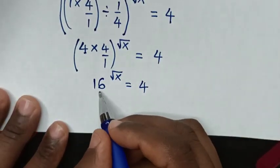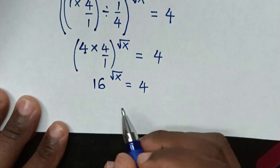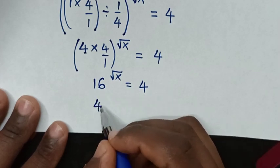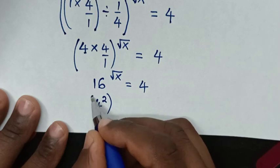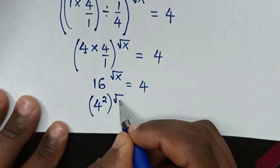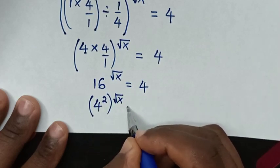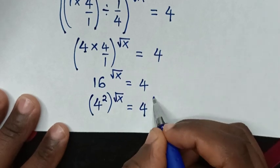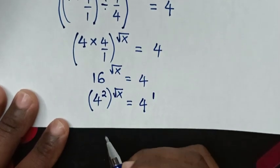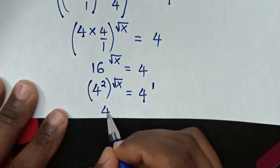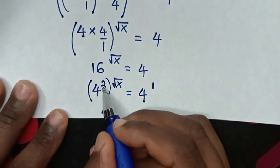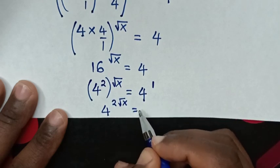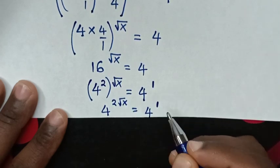To rewrite 16 with base 4: 16 is the same as 4 squared. So it will be 4 squared, to the power of square root of x, equals 4. Then this 4 on the right is the same as 4 to the power of 1. It will be 4 to the power of 2 times square root of x — that is, 2 square root of x — equal to 4 to the power of 1.